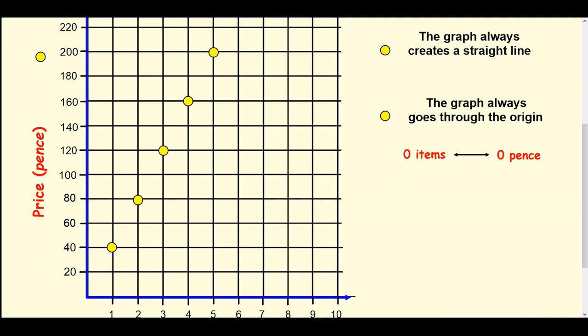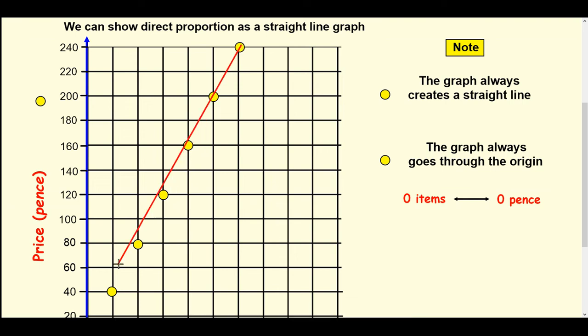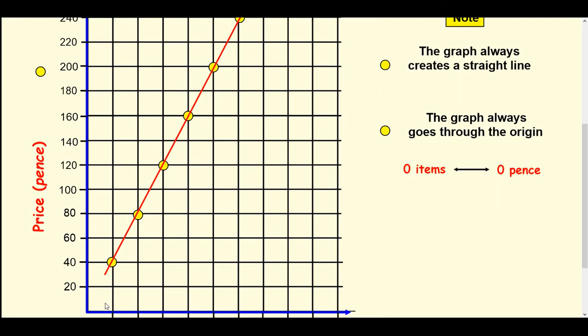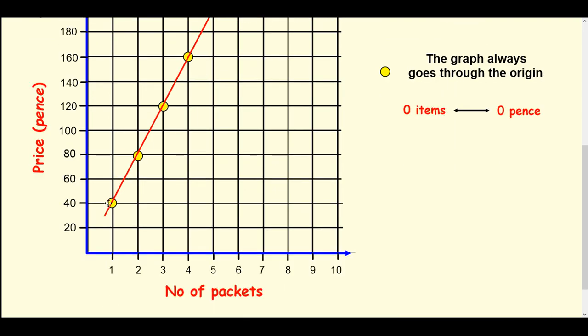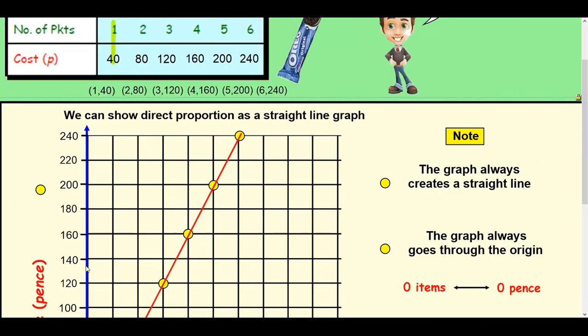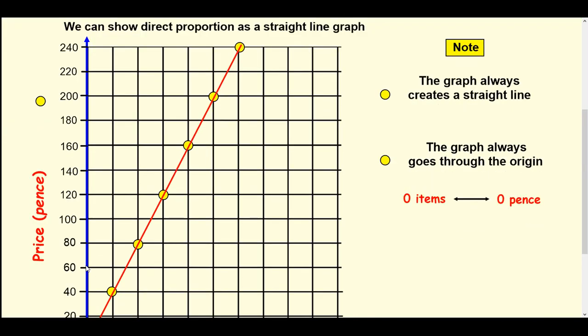Now if we were to join that up, what we'll get is a straight line. We can start from the top all the way down, and I'll just continue it down here to there. Okay, and that is a linear graph of direct proportion.